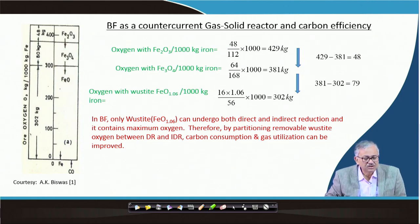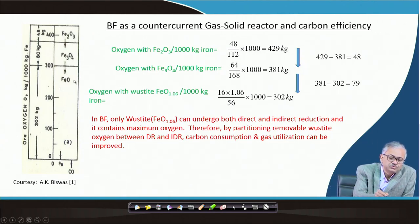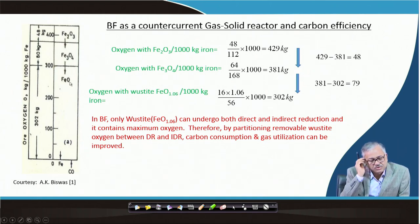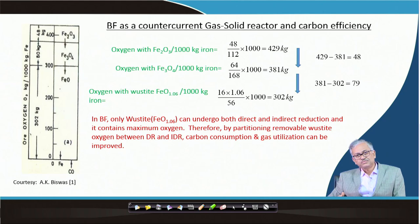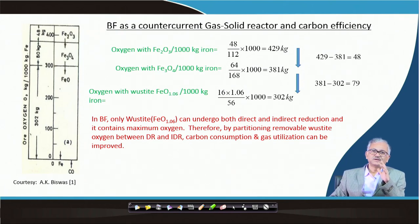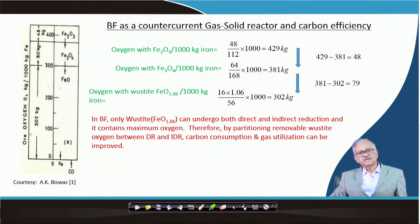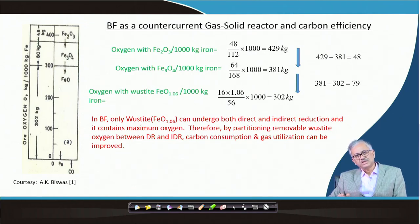Maximum oxygen is associated with the wustite, and wustite reduction can take place by both direct and indirect reduction. We can carry out part of the wustite oxygen removal by direct reduction — the CO generated can then be used to take out the rest of the wustite oxygen by indirect reduction. This would further increase carbon efficiency. So combining direct and indirect reduction, partitioning wustite oxygen removal between them, we can further economize carbon consumption.